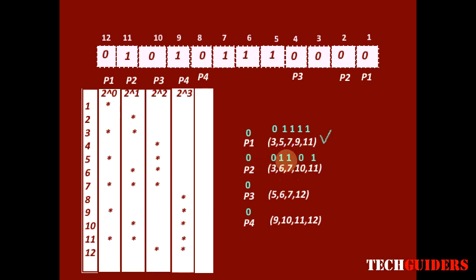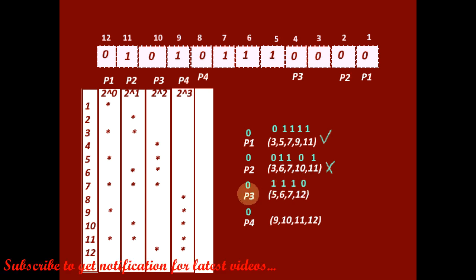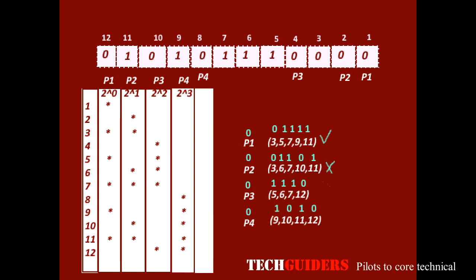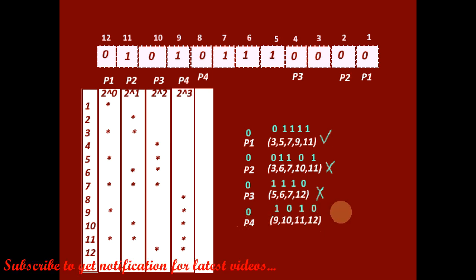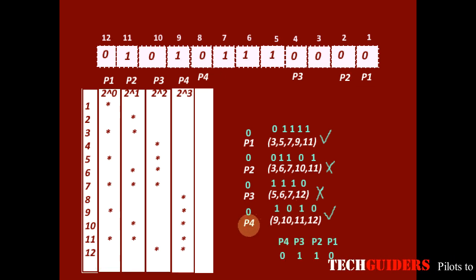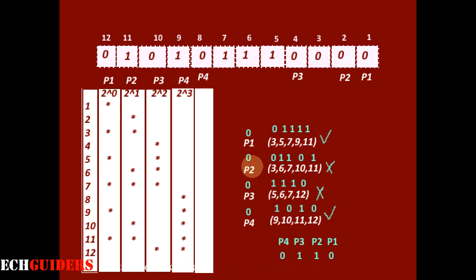The number of 1s for p1 is even, so p1 is correct. The number of 1s for p2 is not even, so p2 is wrong. For p3: bit 5 is 1, bit 6 is 1, bit 7 is 1, bit 12 is 0 — p3 is also wrong. For p4: bit 9 is 1, bit 10 is 0, bit 11 is 1, bit 12 is 0 — the number of 1s is even, so p4 is correct. Summary: p4 = 0, p3 = 1, p2 = 1, p1 = 0.